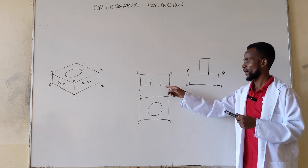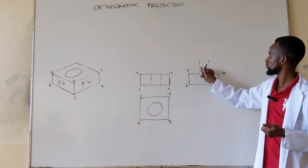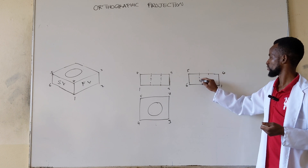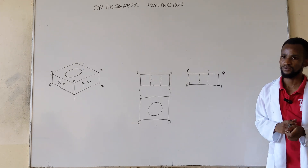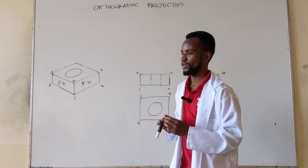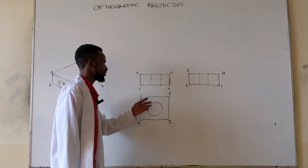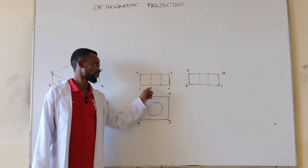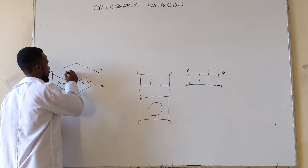If it's a through hole, it will go as far as the bottom edge. Then you have shown that it is a through hole. Obviously we know that this distance here is the diameter of this circle — the diameter is noted there.